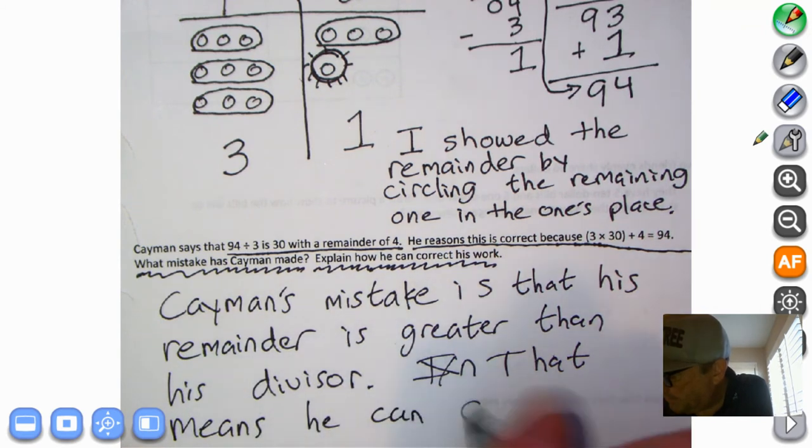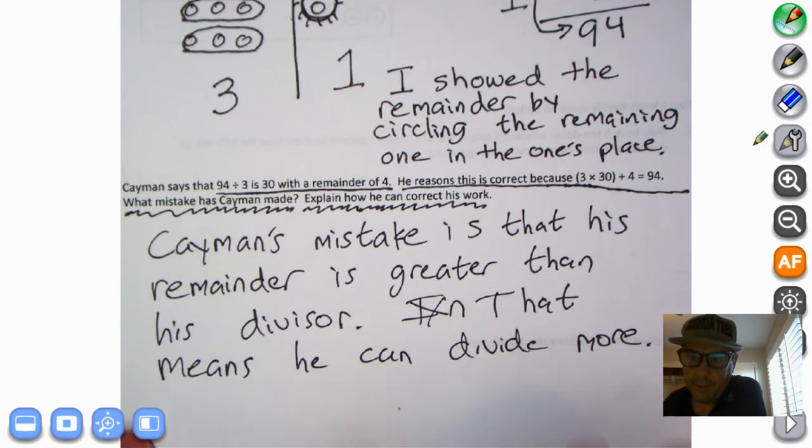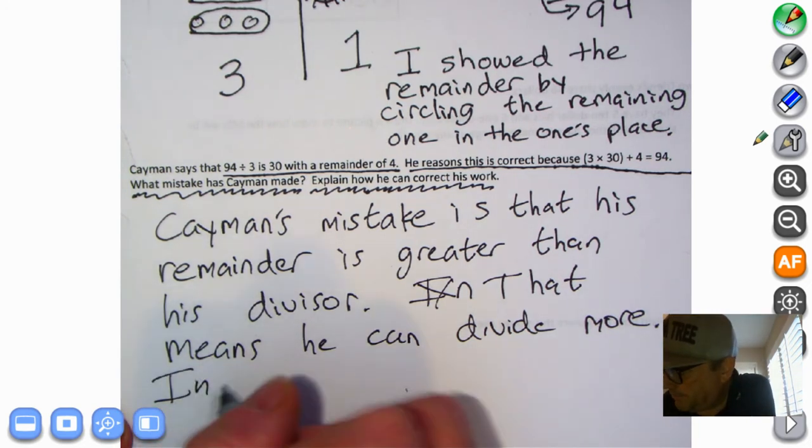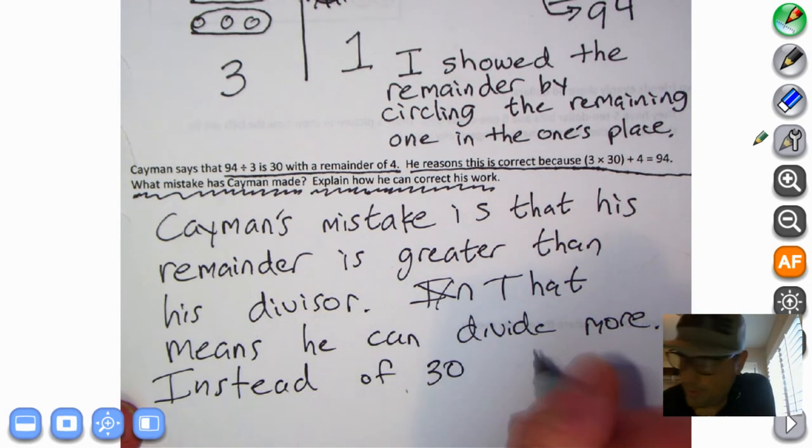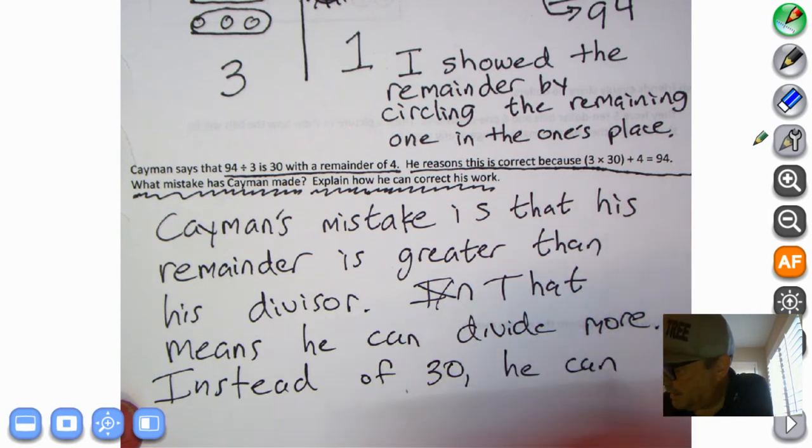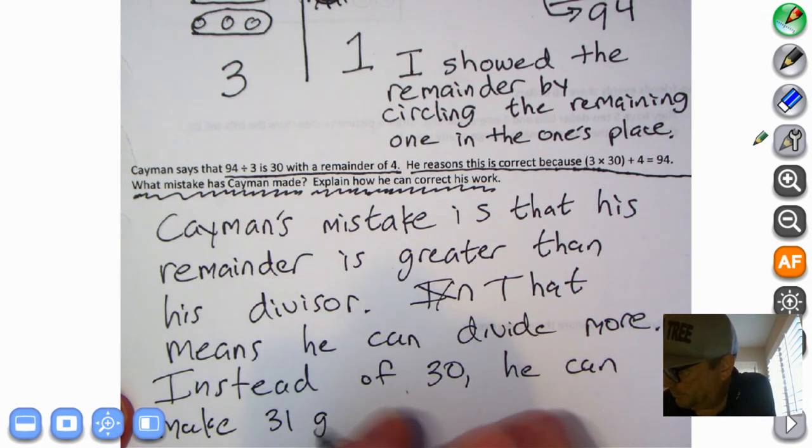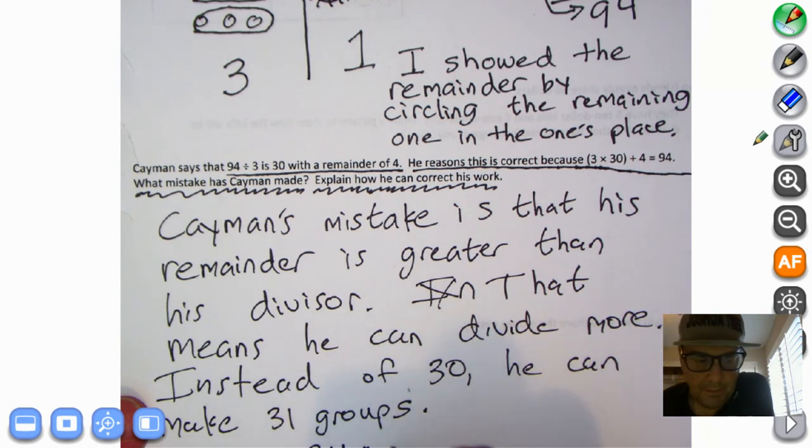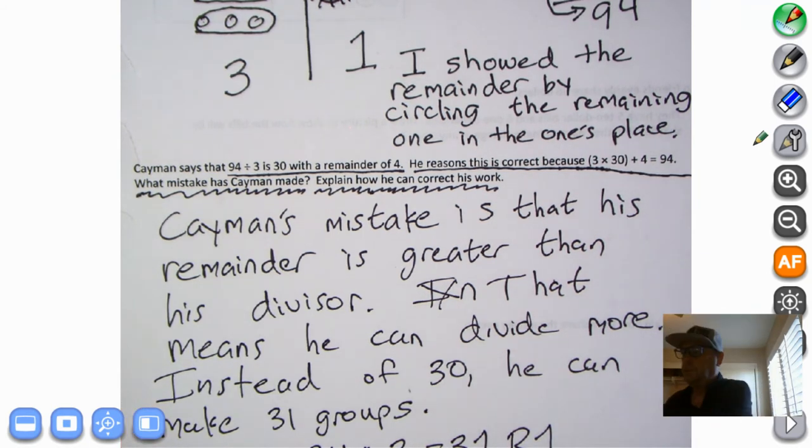That means he can divide more. If your dividend, the number being divided, is greater than your divisor, the number doing the dividing, of course you can divide more. So instead of that answer here we can say instead of 30, he can make 31 groups.